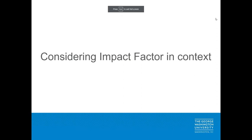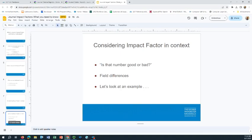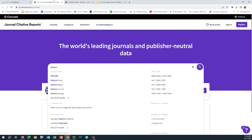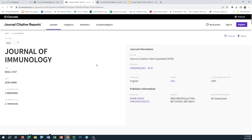The next thing I want to talk about is considering impact factors in context. The most common question people ask about impact factors is: is that number good or bad? And the answer is it depends. There are significant variations in citation patterns among researchers in different fields, which means that an impact factor that is good for a journal in one field might not be so good for a journal in another field. So I'm going to go back to Journal Citation Reports and look for another journal — the Journal of Immunology. If I scroll down, I can see that the 2022 impact factor for this journal is 4.4. So is that good or bad?